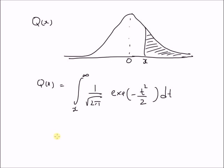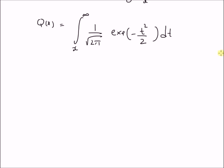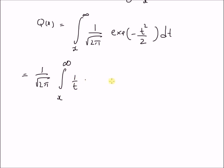Now, we want to derive an approximate expression for this integral, especially for large values of x. This integral can be rewritten as (1/√(2π)) times the integral from x to infinity of (1/t) multiplied by t × exp(−t²/2) dt.